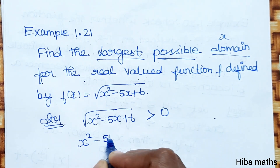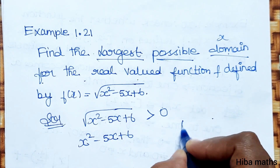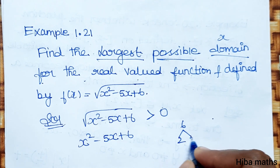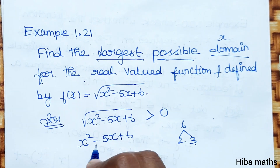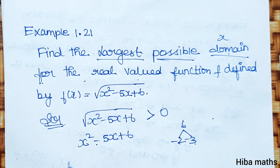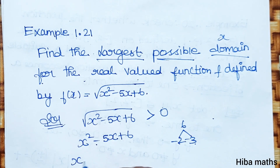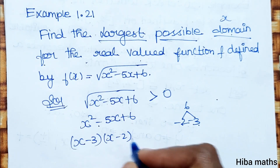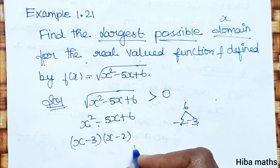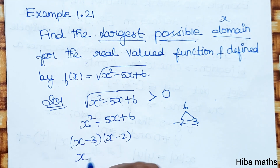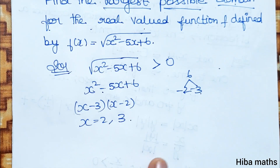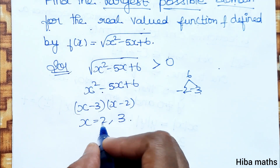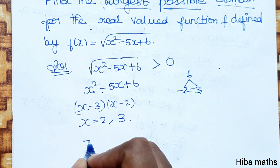x squared minus 5x plus 6 — we factor this. The roots are x minus 2 and x minus 3, so x squared minus 5x plus 6 equals (x minus 2)(x minus 3). Setting this equal to zero gives x equals 2 and x equals 3.